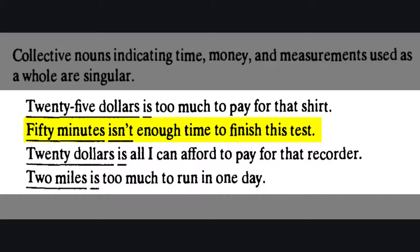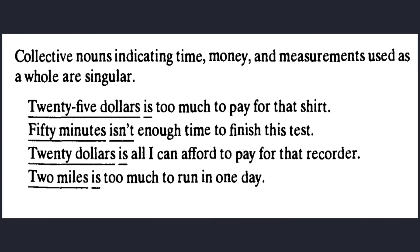'50 minutes' will be measurements and will be singular. '20 dollars' will also be money and singular. And finally, '2 miles' will be measurements and singular. That is all about collective nouns. I hope all of you understand. Thank you.